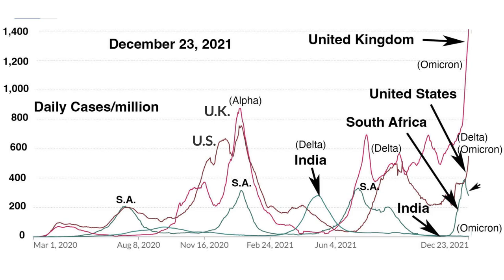These cases were predominantly caused by the Alpha variant. Both the U.K. and U.S. case numbers dropped during the spring, and it was during that time that cases in India rose to very high levels due to the Delta variant. At that time, the Indian government relaxed infection control measures and permitted large religious gatherings, leading to explosive exponential growth of infections. Despite being a leading manufacturer of vaccines, less than 2% of their population had been vaccinated at that time.